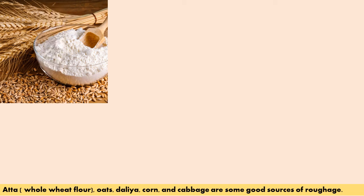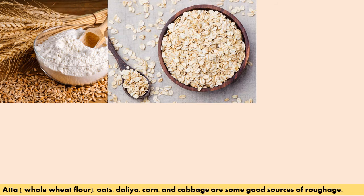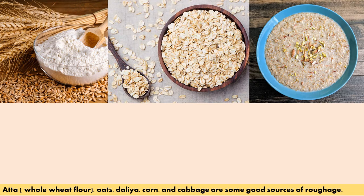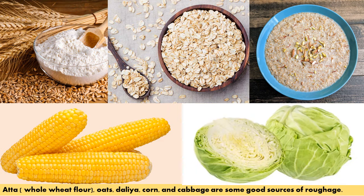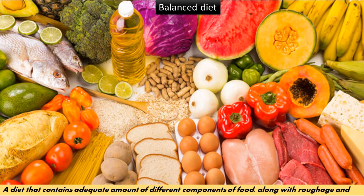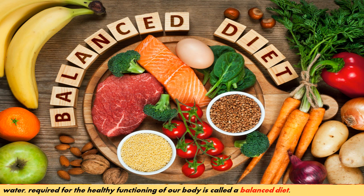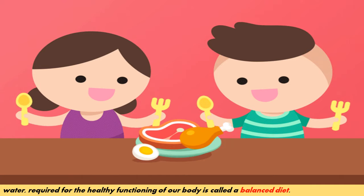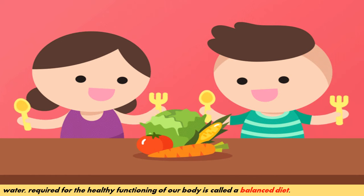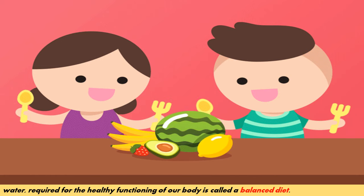Whole wheat flour, oats, daliya, corn, and cabbage are some good sources of roughage. A balanced diet is one that contains adequate amounts of different components of food along with roughage and water, required for the healthy functioning of our body. Our diet must include adequate amounts of all food components, so remember to eat food from all food groups every day.